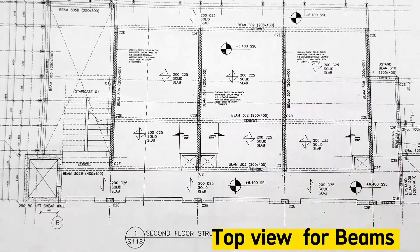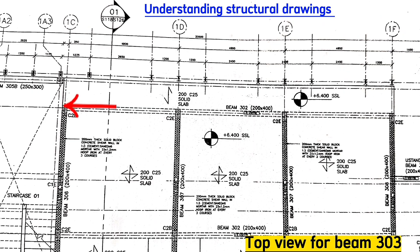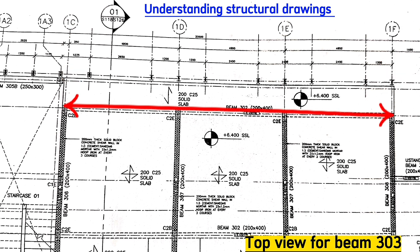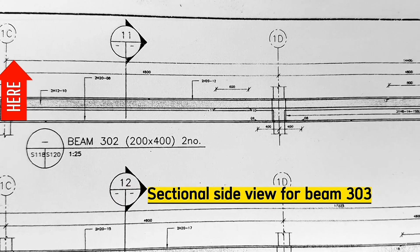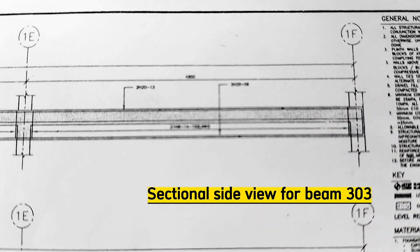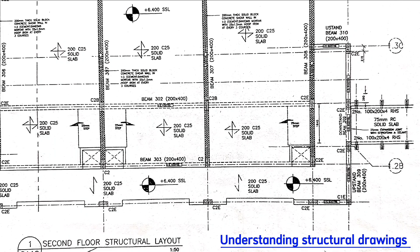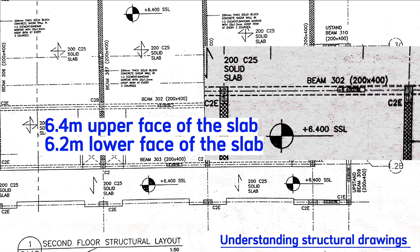Each beam has its detail in the section. For example, this is beam 302 on the top view. It starts from grid line 1C to grid line 1F. Similarly on the section, this is grid line 1C to grid line 1F. The drawing also details that the slab level is at 6.4 meters top slab level, or the upper face of the slab.